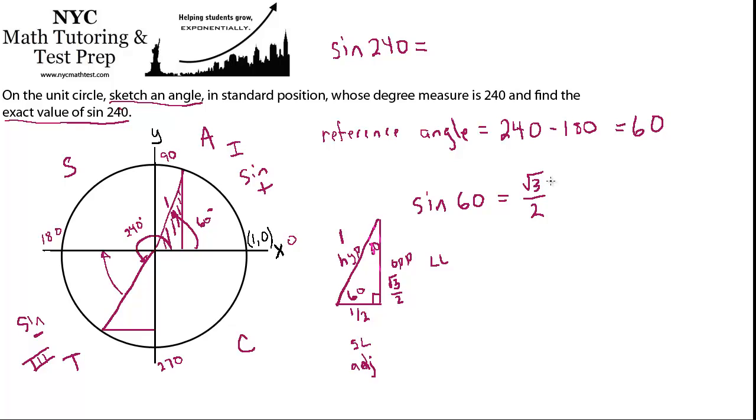So if the sine of 60 is root 3 over 2, then the sine of 240 is going to be negative root 3 over 2. And that is your final answer.